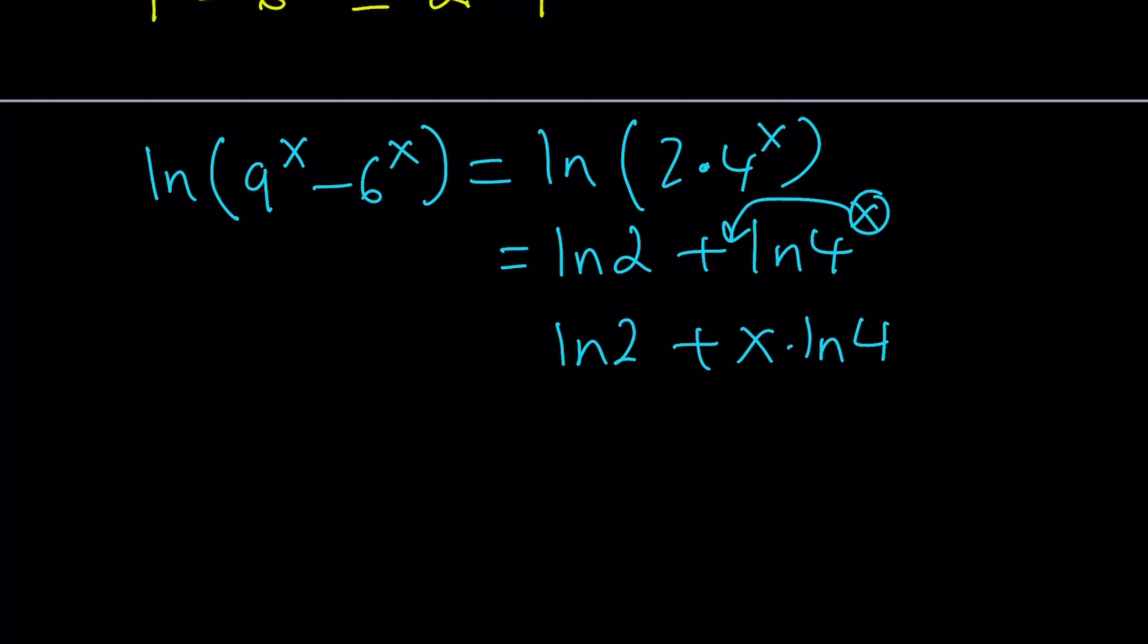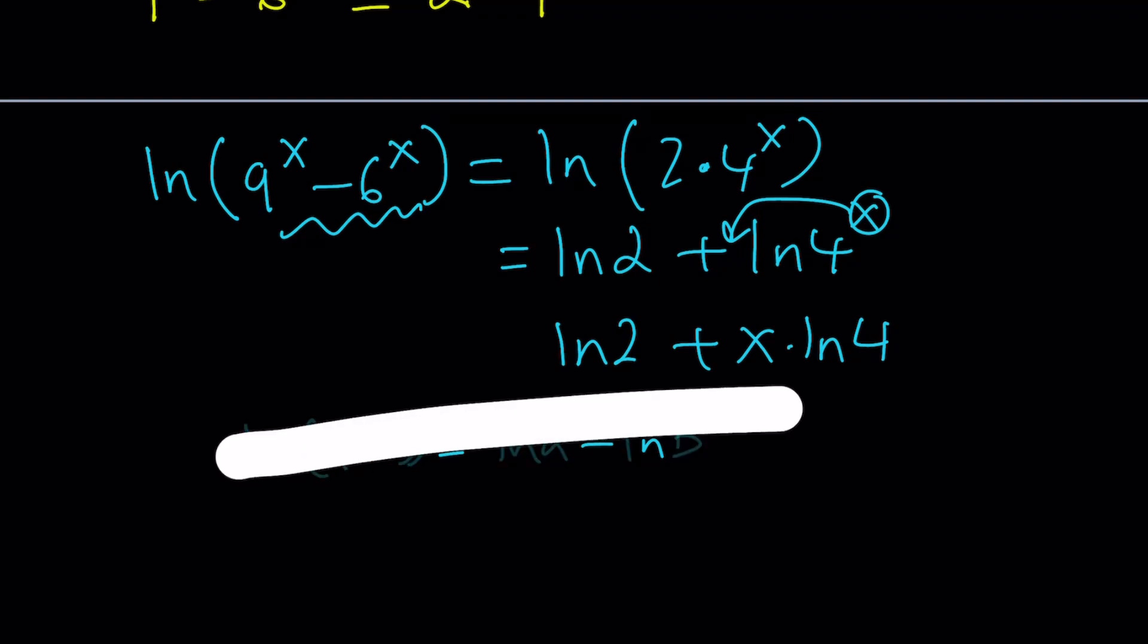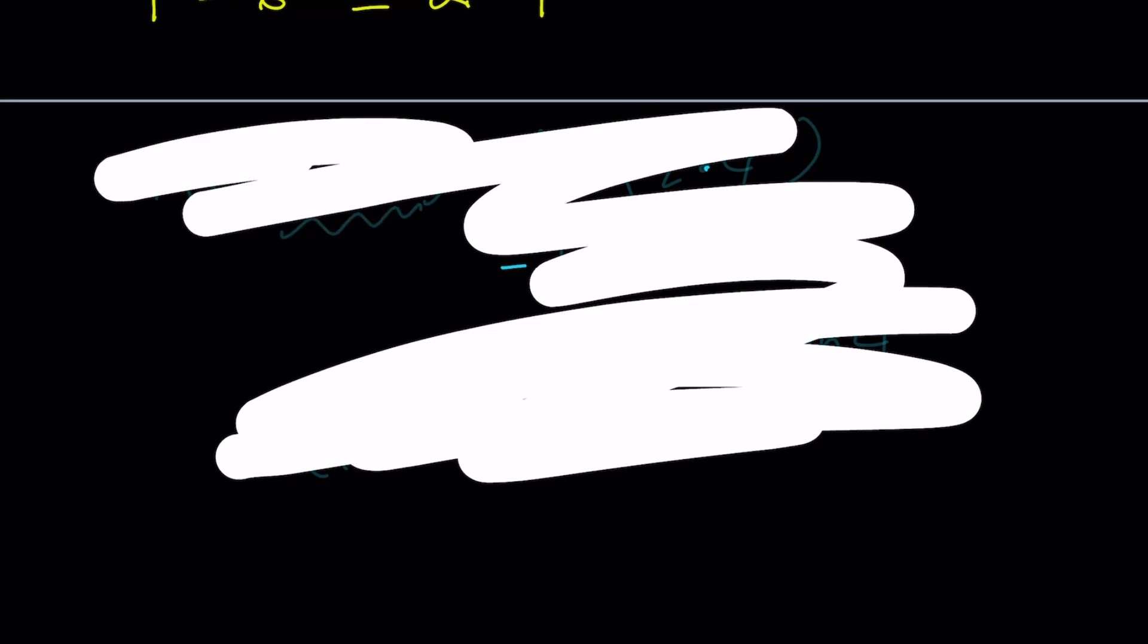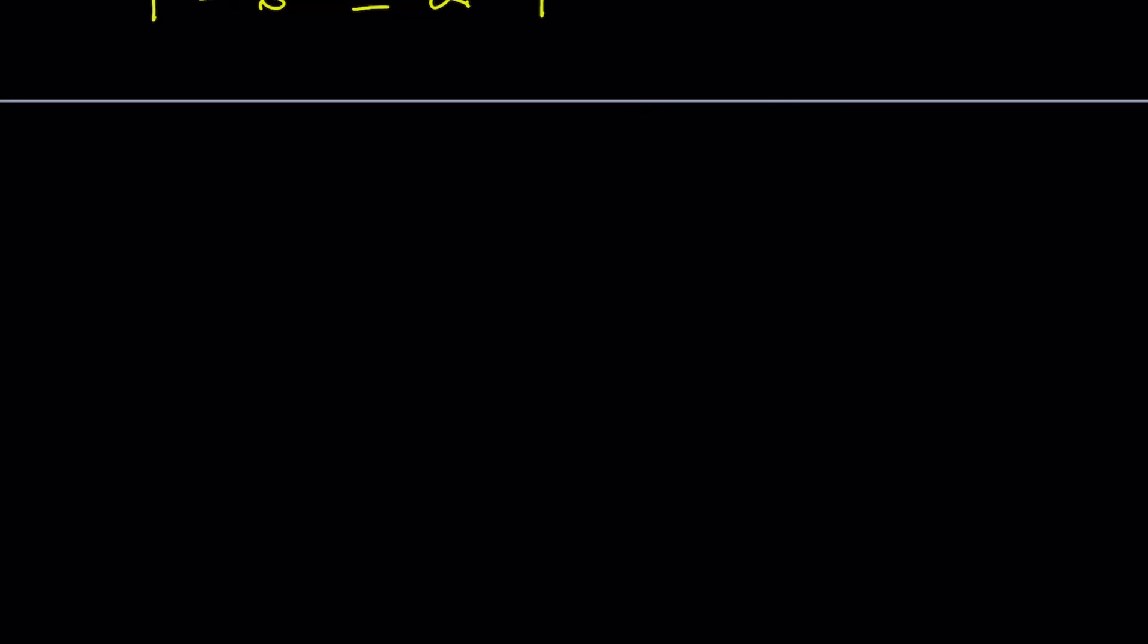But on the left hand side, we have a problem. The log of a difference cannot be simplified. There is no formula or identity that gives us that. In some specific cases you can have a situation like ln(A - B) = ln(A) - ln(B), but these are just equations that have particular solutions, not true in general. So taking the natural log on both sides is not going to help.